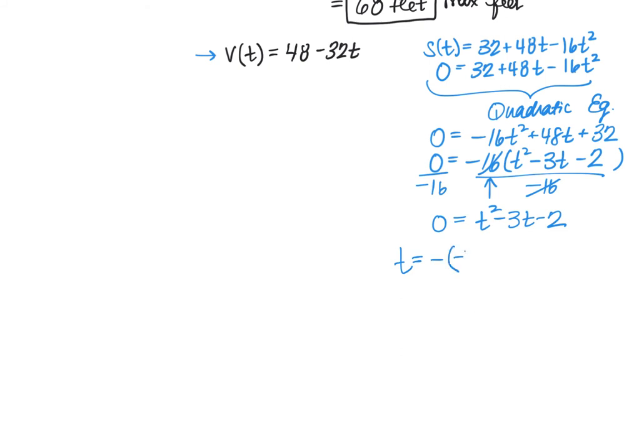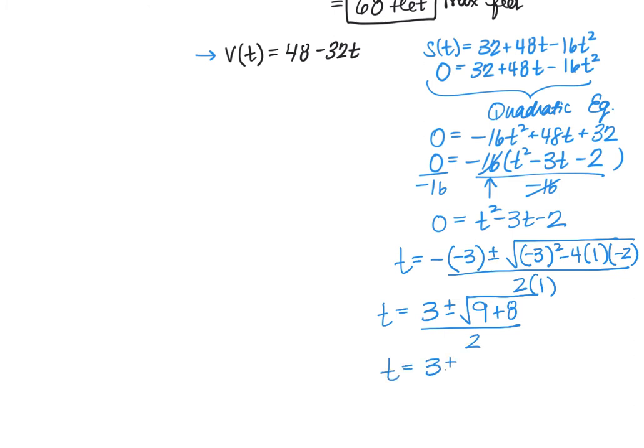We're going to do our quadratic formula solving for t. We have -b, our b value is -3, plus or minus the square root of b² minus 4ac. That's -3 squared minus 4 times 1 times -2, all divided by 2a. Simplifying: 3 plus or minus the square root of 9 plus 8, which is 3 plus or minus √17 divided by 2. These are the exact times. One answer is approximately 3.56 and the other is approximately -0.56.